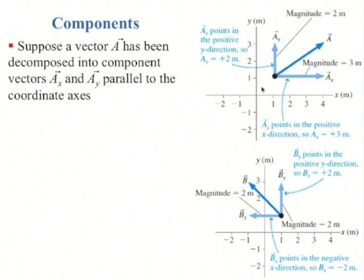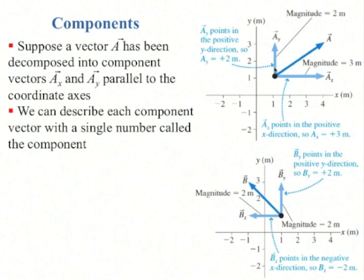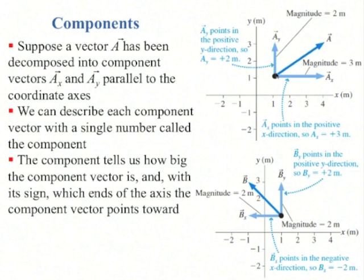The nice thing about these components is that a sub y is parallel to the y-axis, and a sub x is parallel to the x-axis. These act like one-dimensional vectors, meaning that you can specify them with a single number called the component. For example, vector a here has a y-component of 3 minus 1, or plus 2, and an x-component of 4 minus 1, or plus 3. The component tells us how big the component vector is.